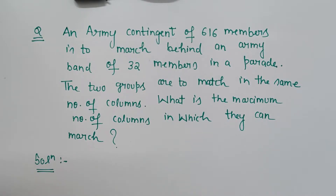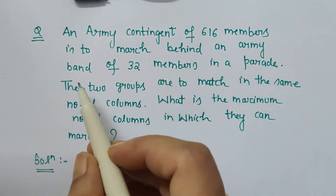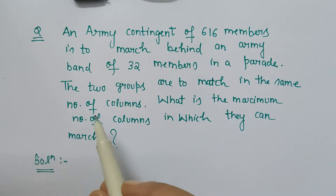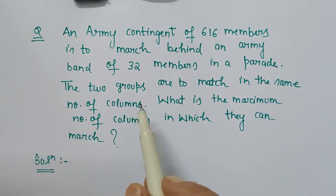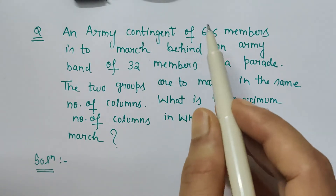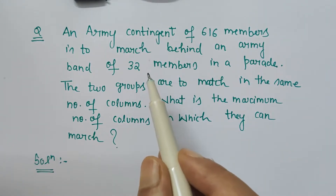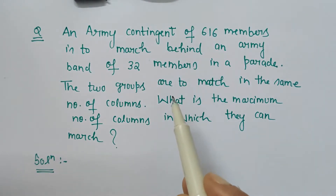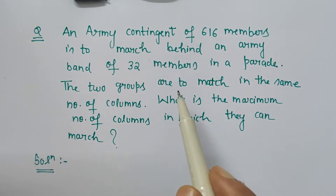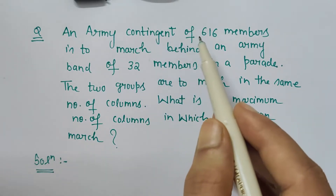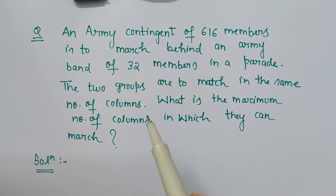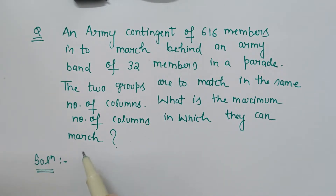So when we read this question: an army contingent of 616 members is to march behind an army band of 32 members in a parade. The two groups are to march in the same number of columns. That means the answer is not 32 nor 616 — it lies somewhere between, less than 32 or less than 616. So whenever the answer would be a number smaller than the values given in the question, that is when we have to find HCF.